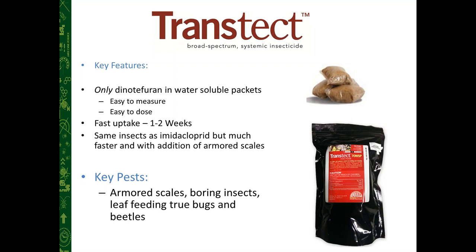TransTech, like our other Dinotefuran products, has very quick uptake. When applied as a soil application or systemic lower bark spray, this product moves very quickly within the tree to get up into the canopy and begin affecting pests — we see effects within one to two weeks, even on larger 20-inch-plus trees. This makes TransTech an in-season, just-in-time treatment without needing foliar applications, avoiding issues with drift and off-target effects.